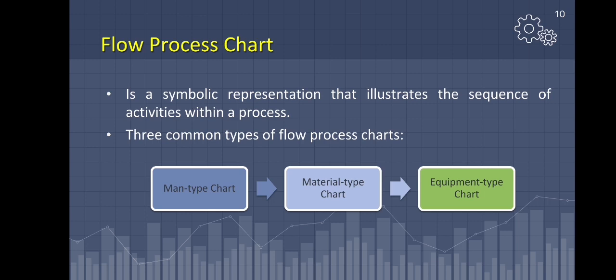A flow process chart is a symbolic representation that illustrates the sequence of activities within a process. It is used to record and analyze the activities that make up a process to determine which add value and which do not. Activities can be any operation, inspection, storage, transportation, and delay actions that are carried out by an individual person, a team, a machine, a computer system, or a combination of all. Process flow charts are preferred when the process is sequential in nature.